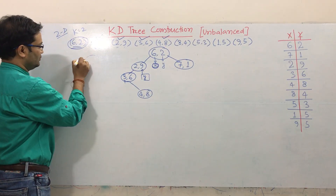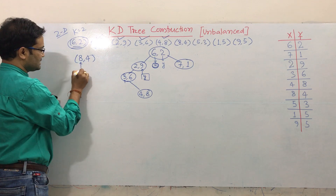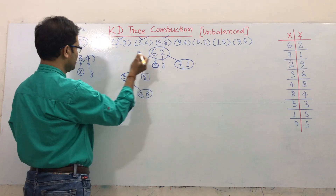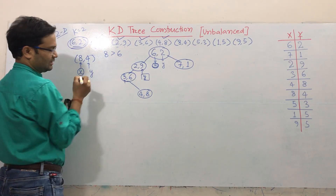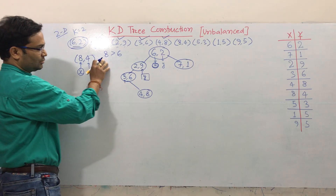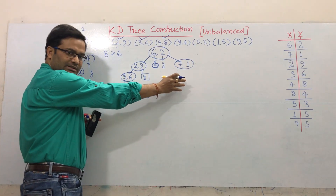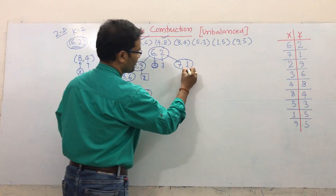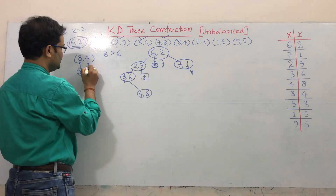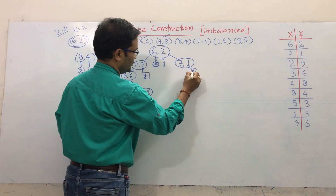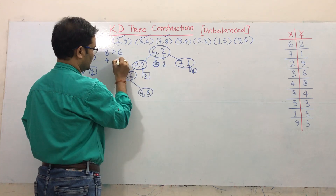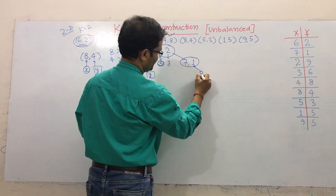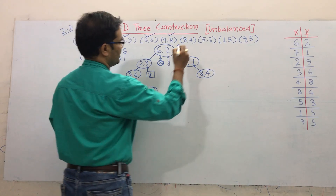Now take the point 8, 4. This is x, this is y. Start with the root: x=8 is greater than 6, so it goes right. But the right side already has one node. So this time we check y: y=4 compared with y=1 — 4 is greater than 1, so it goes to the right side of that node.